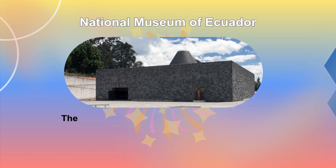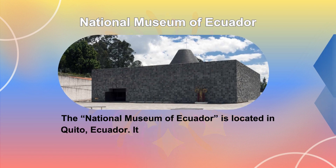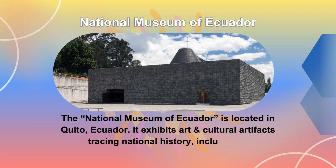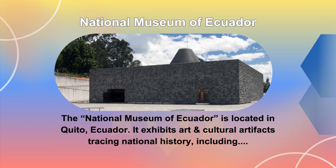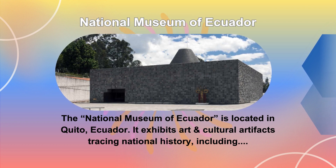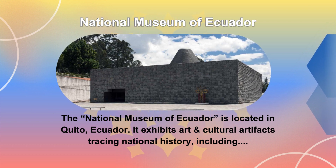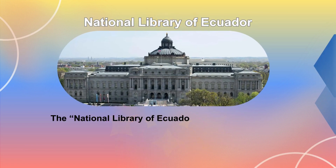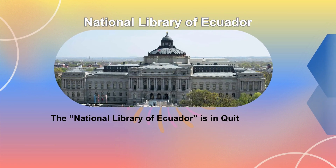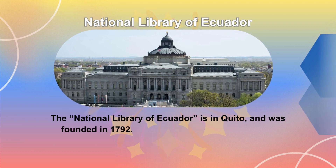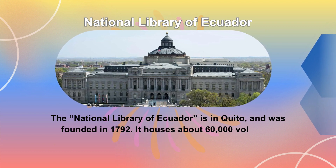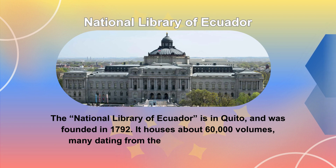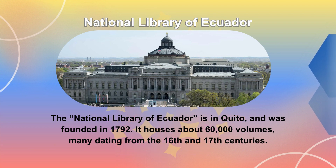The National Museum of Ecuador is located in Quito, Ecuador. It exhibits art and cultural artifacts tracing national history, including pre-Columbian gold and ancient ceramics. The National Library of Ecuador is also in Quito and was founded in 1792. It houses about 60,000 volumes, many dating from the 16th and 17th centuries.